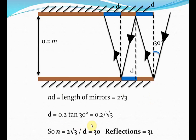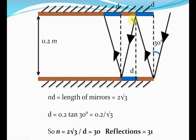So the total number of reflections before this incident ray goes out of the two-mirror system is 31 — that is 30 plus 1. Can you guess why we've written 31 instead of 30? That's because there will be a reflection at the very beginning as well, before our first counted reflection started. That's why the total number of reflections is 31.